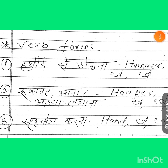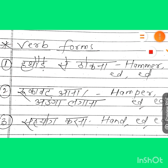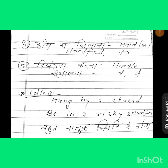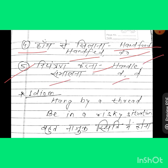Next, we have some verb forms starting with H. Number one: 'thokna' or 'hathodi maarna' — hammer, hammered, hammered. Number two: 'rukawat daalna' or 'adanga lagana' — hamper, hampered, hampered. Number three: 'saunp dena' — hand, handed, handed. And number four: 'haath milana' — hand, handed, handed. Number five: 'niyantran karna' or 'sambhalna' — handle, handled, handled.